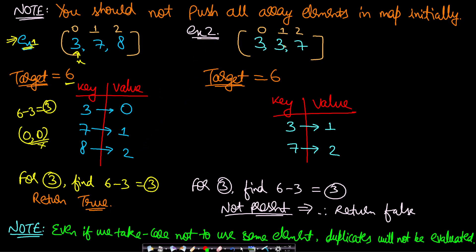Another edge case: if the array is [3, 3, 7] with target 6, pre-populating the map would have the second 3 overwrite the first (index 1 overrides index 0). This could cause incorrect results. Inserting elements progressively as you iterate avoids these special cases. Always be aware of these edge cases.